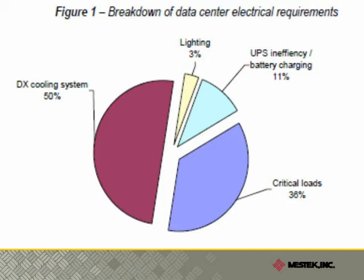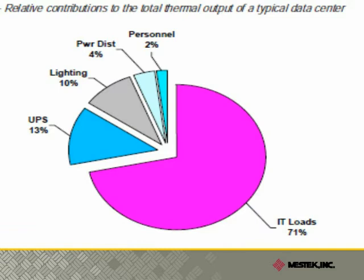Not all of the power that goes into a data center is actually used by the servers. On average, only about 36% of the electrical energy is consumed by the computer equipment. The rest goes into things like backup power supplies, the lights in the building, and the biggest part goes into the building cooling system. All of the energy that goes into a server for processing information ends up being converted to sensible heat. So even though the servers represent only 36% of the energy consumed, they represent over 70% of the heat generated in a data center building.